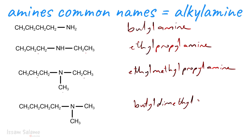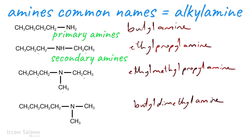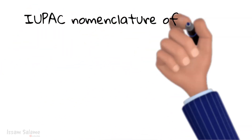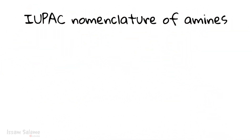As you noticed, in the first structure only one hydrogen of ammonia is replaced by an alkyl group, so it is an example of a primary amine. In the second structure, two hydrogens were replaced, so it is an example of a secondary amine. The third and fourth structures are examples of tertiary amines since all three hydrogens were replaced by alkyl groups. Now I'm going to focus on IUPAC nomenclature of amines.